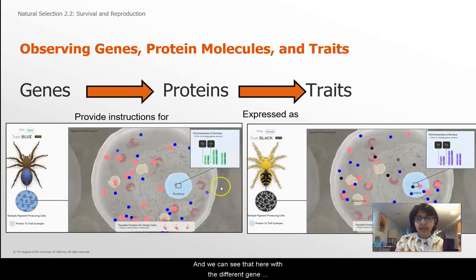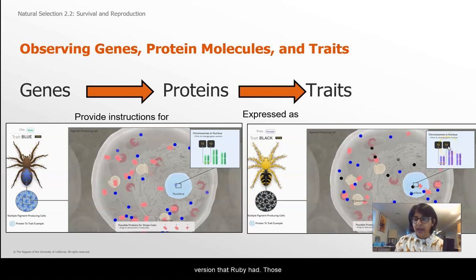And we can see that here with the different gene version that Ruby had, those gene versions, that difference provided different instructions, which was a different shape protein, which fitted differently with the molecule that created the black pigment. So a lot going on here. Remember, genes provide instructions for proteins, which are then expressed as traits.